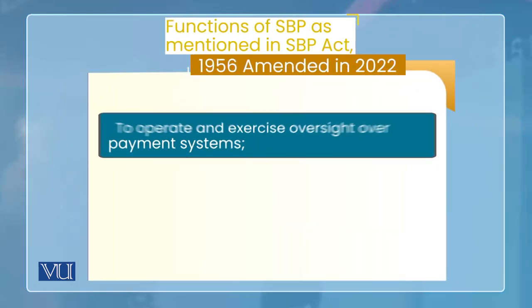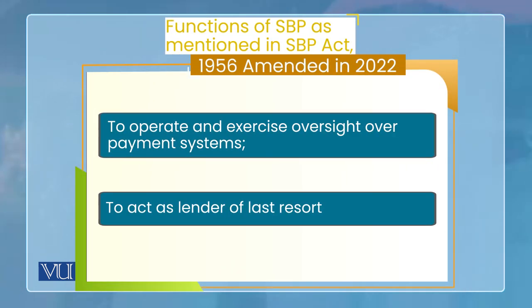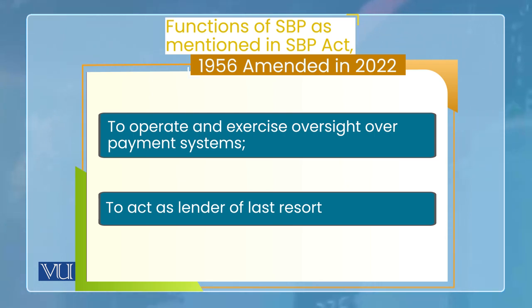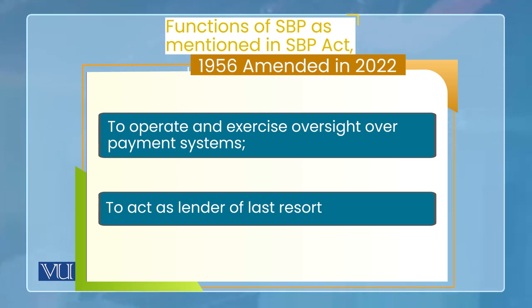State Bank of Pakistan کے functions میں سے ہے: to operate and exercise oversight over payment system۔ آج کے دور میں payment technology بہتر ہونے کے لیے ضروری ہے کہ جو interbank transactions ہوتی ہیں — ایک بندہ چیک لکھتا ہے دوسرے بندے کو جس کا الگ account کسی دوسرے بینک میں ہے — اس کے لیے ضروری ہے کہ ایک clearing system ہو جس کا look after central bank کرے۔